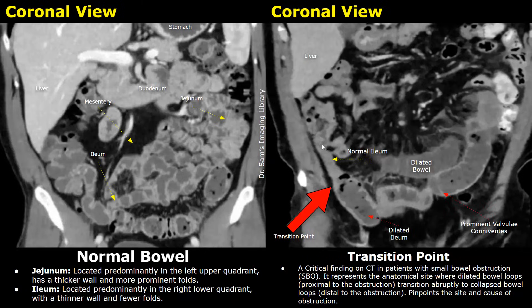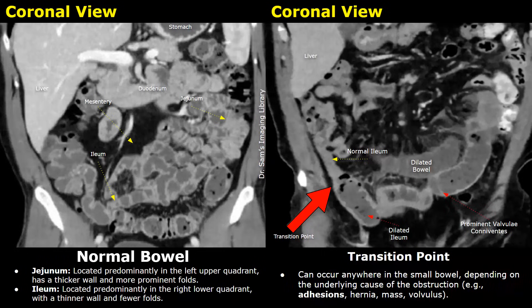The transition point pinpoints the site and cause of obstruction. It can occur anywhere in the small bowel depending on the underlying cause of the obstruction. In this case the obstruction was due to an adhesion.